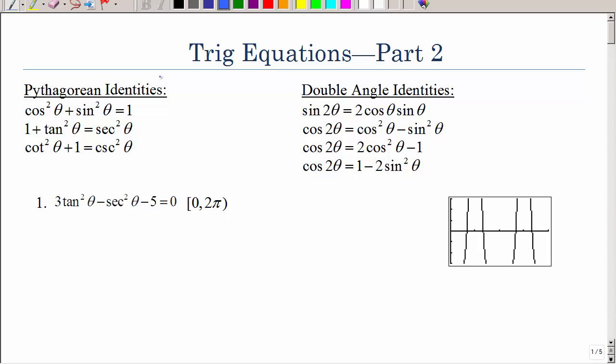In this lesson, we're going to look at trig equations that may require us to use some identities that we have learned in the past. So let's just review those Pythagorean identities, those three that help you relate cosine squared with sine squared and tangent squared with secant squared. And then we have double angle identities that let you change a 2θ in terms of just 1θ.